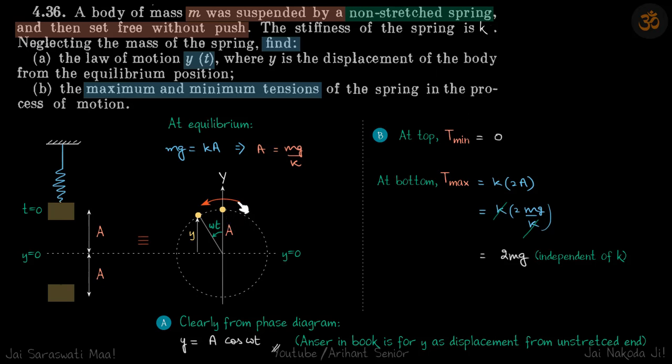Once this phase diagram is clear we can directly see what is the position of Y which we need to find. So Y is equal to the projection of this on Y axis, so that is a cos omega t. The answer is given with Y's displacement from the equilibrium position.